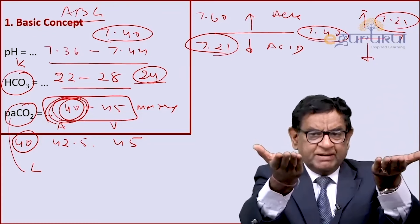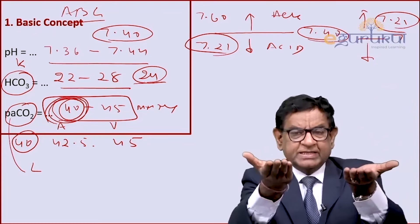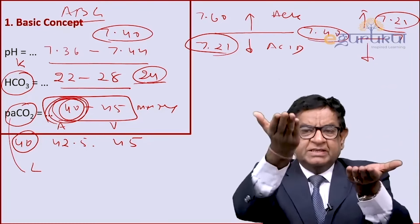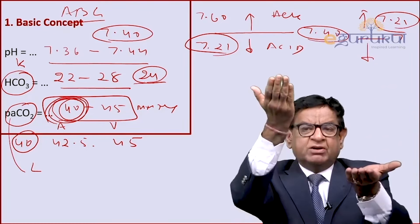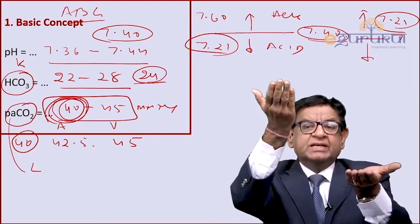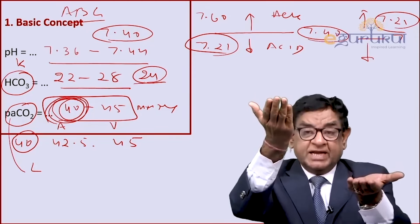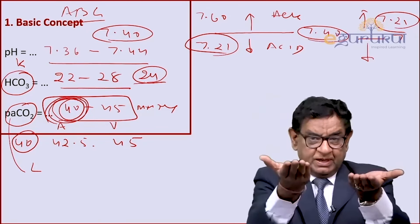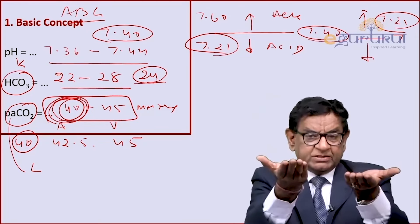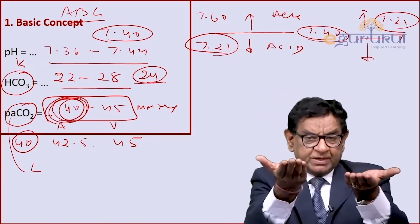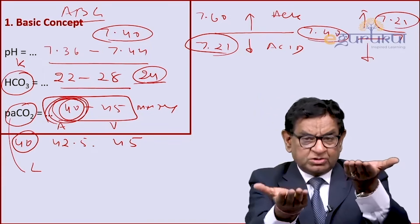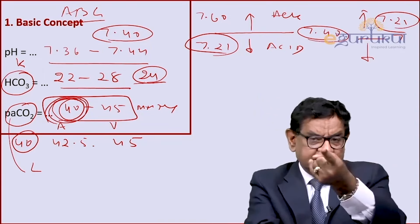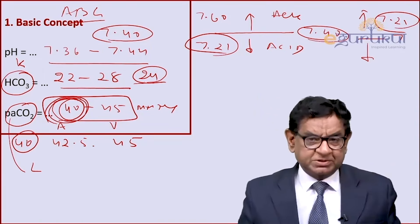For example, in a case of cardiac arrest, lactic acid accumulates and that leads to acidosis. In the case of vomiting, there is loss of acid, and that leads to alkalosis.